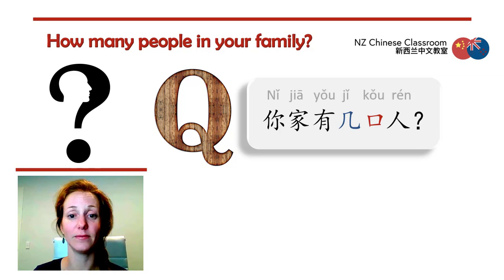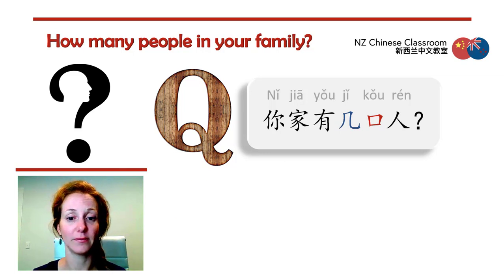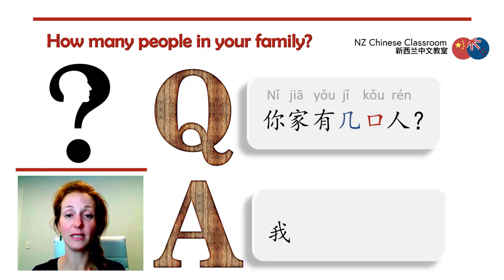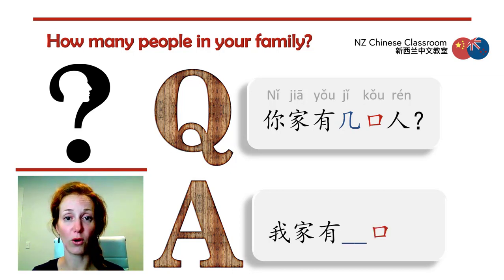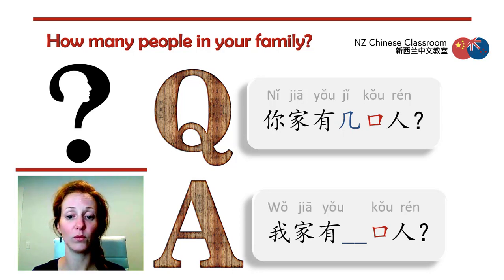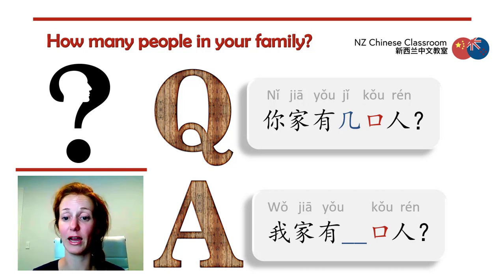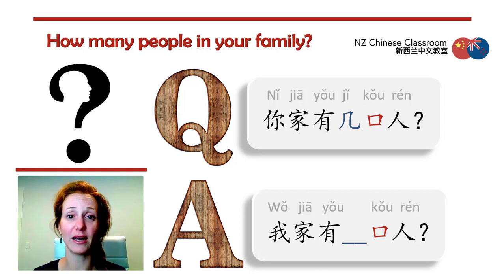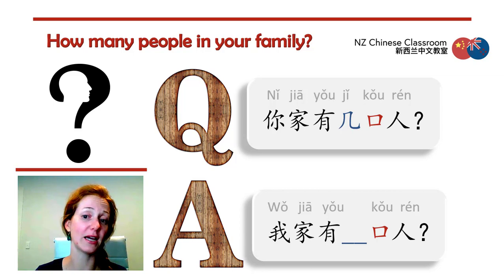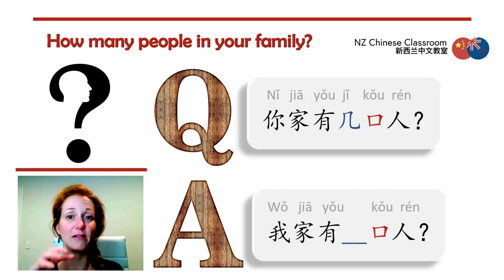So 你家有几口人? How do we answer? Let's have a look at the answer and see if we can make some observations. Have a look at the question and look at the answer — what have we taken out and replaced? That's right. We've taken out the question word and replaced it with the answer. Making answers in Chinese is really easy: we take out the question word and put in the answer. We don't need to rearrange the whole sentence.